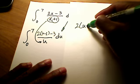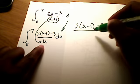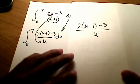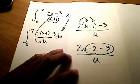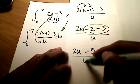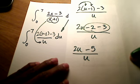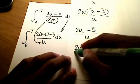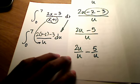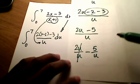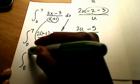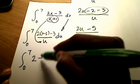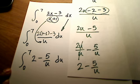Let me work out the numerator with a little algebra. We have 2 times the quantity u minus 1 minus 3, all over u. Distributing the 2 gives 2u minus 2 minus 3 over u. Adding the like terms gives 2u minus 5 over u. I'll separate this into two terms with u as the common denominator: 2u over u minus 5 over u. The u's cancel in the first term, leaving 2 minus 5 over u. So the integral becomes the integral from 0 to 7 of 2 minus 5 over u, du.